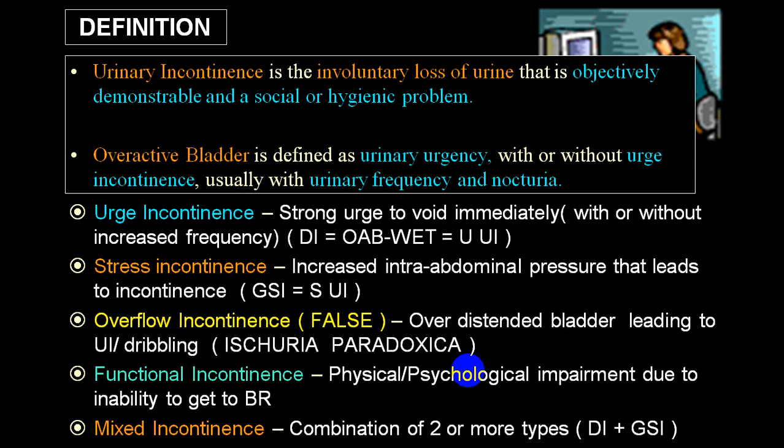Overactive bladder is a variety of incontinence where the person has got urinary urgency with or without urge incontinence, usually associated with frequency and nocturia. Urge incontinence is where the person will have a strong urge to void immediately with or without increased frequency, and it is very common in overactive bladder. This is also called detrusor instability or urge urinary incontinence.